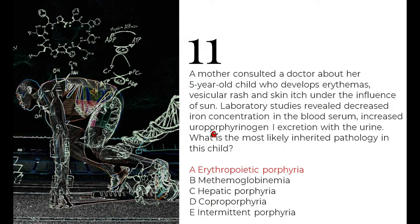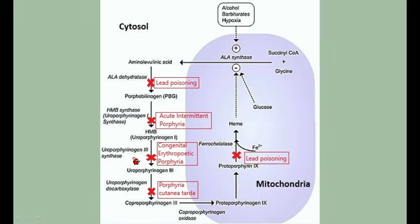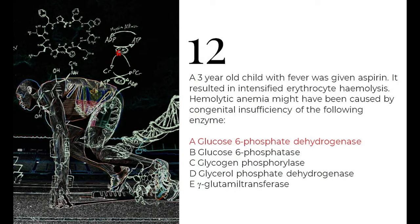Returning to the question: increased uroporphyrinogen 1 means the diagnosis is congenital erythropoietic porphyria, with uroporphyrinogen 3 synthase being the impaired enzyme. That's the answer to question 11.